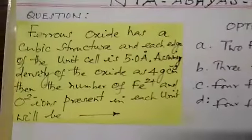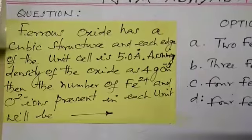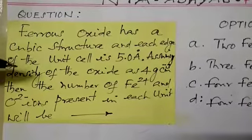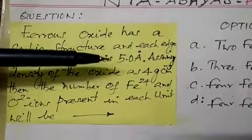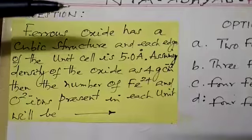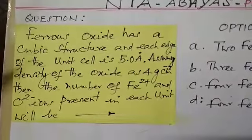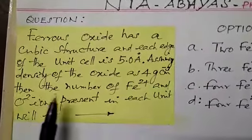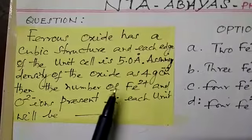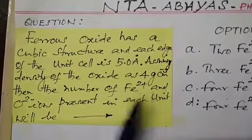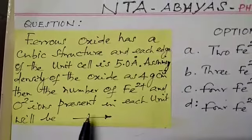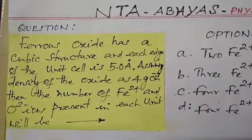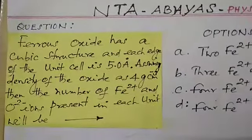Now let us see the first question. Ferrous oxide has a cubic structure and the edge length of the unit cell is 5 Angstrom units. The density of the oxide is 4 gram per centimeter cube. Then the number of ferrous iron and oxide ions per unit cell will be?